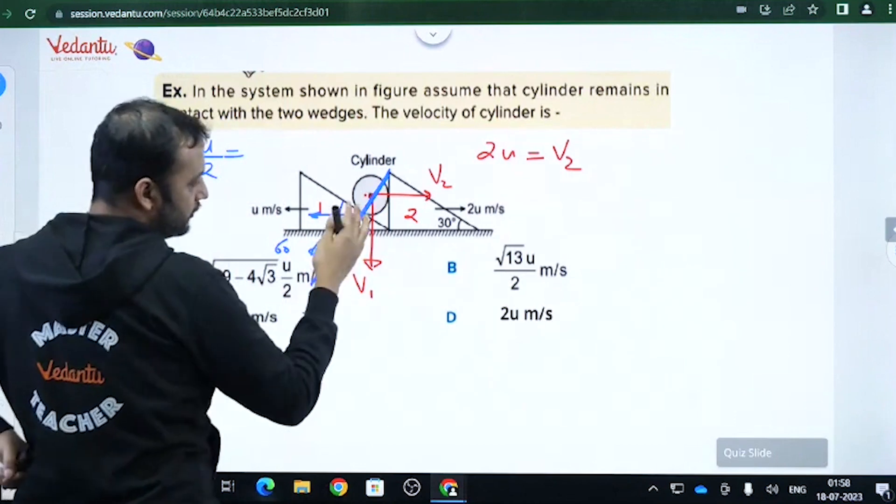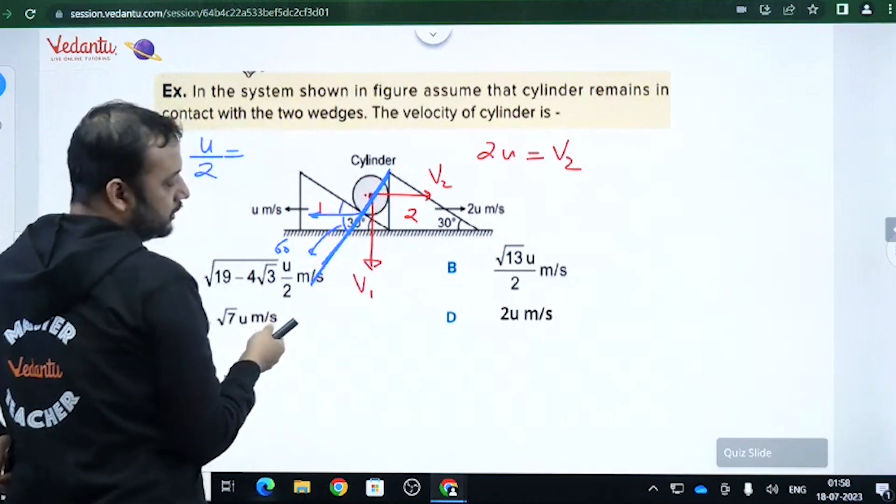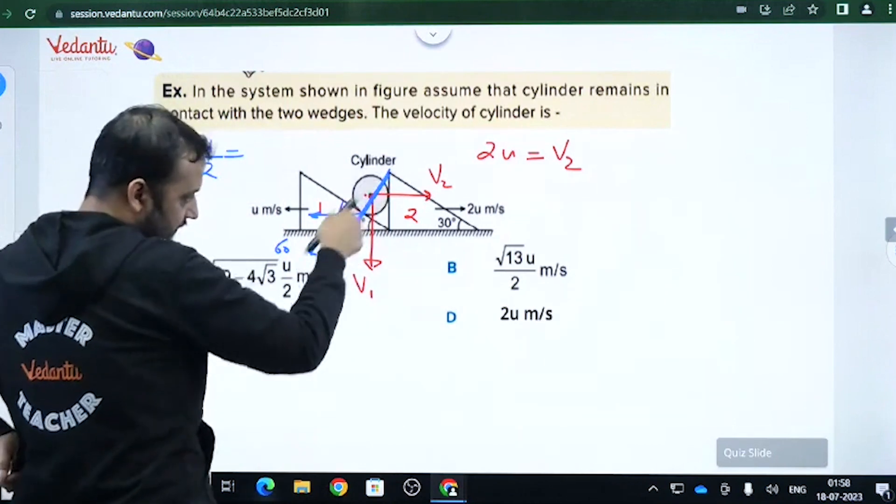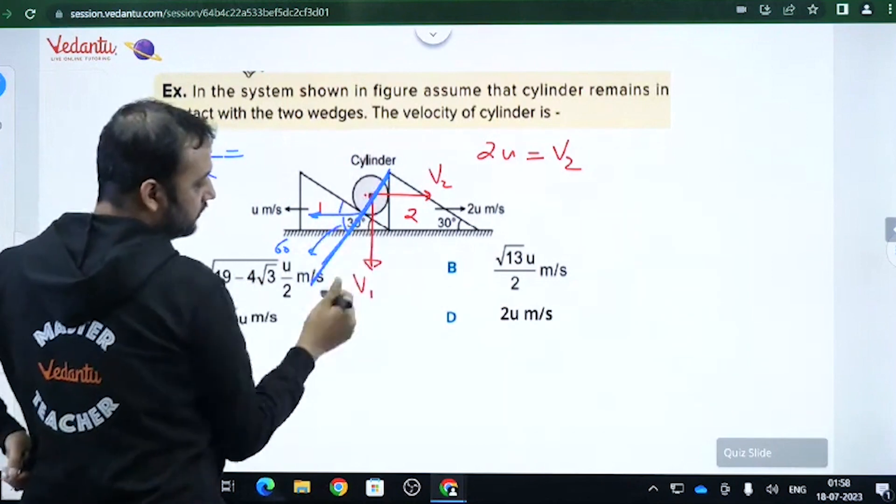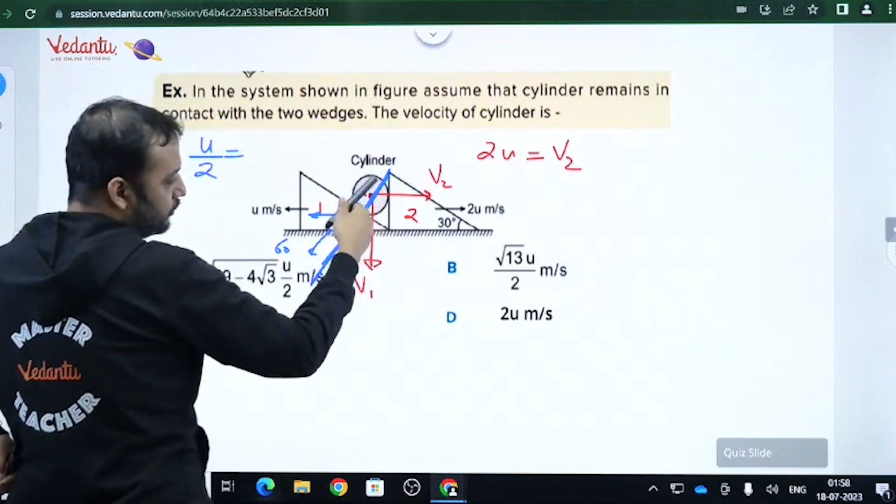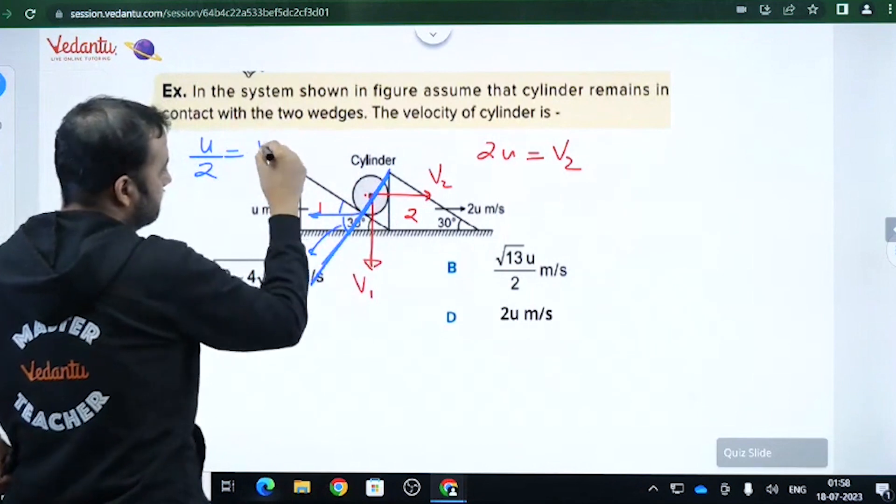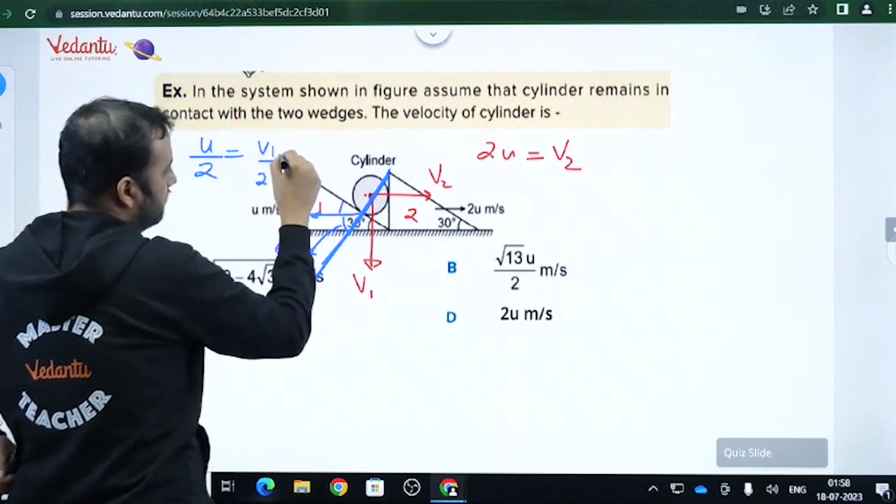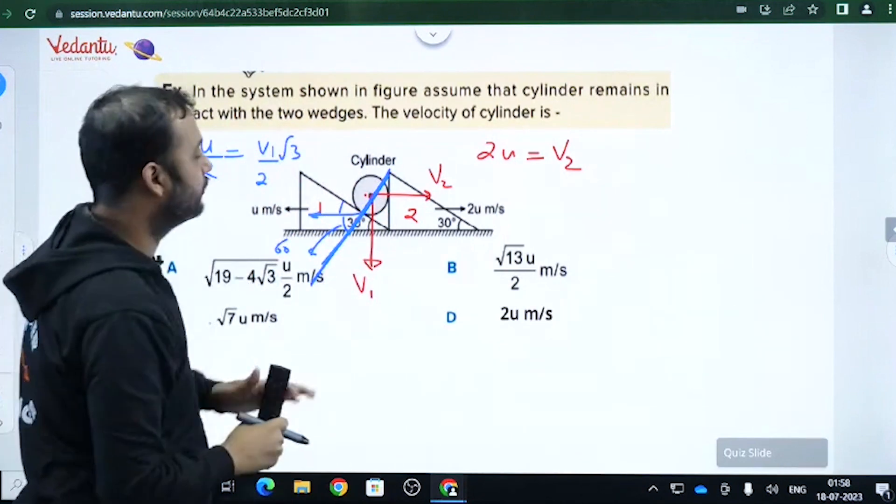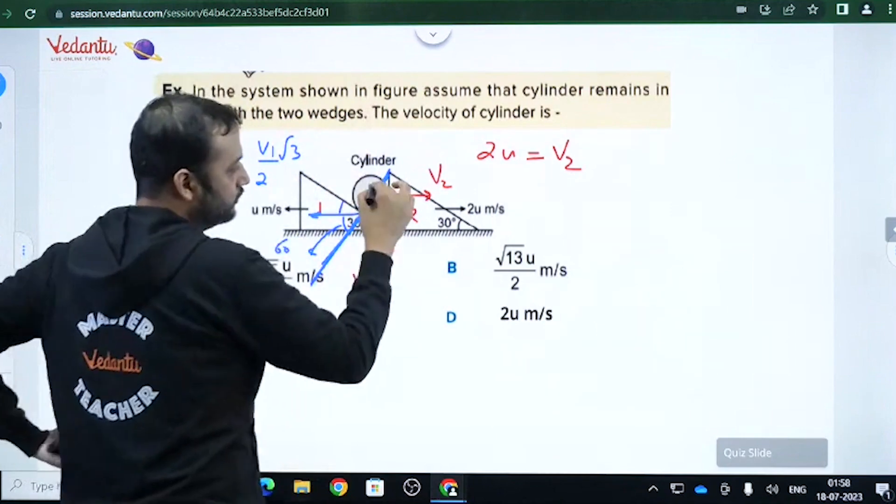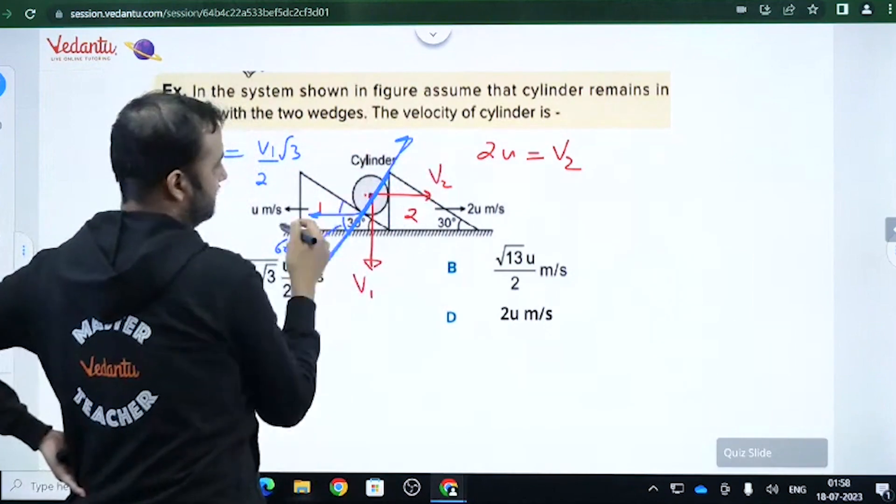That should be equal to velocity of cylinder along the common normal. Now velocity of the cylinder along this axis will be contributed both by v1 and v2. v1 will have a contribution of v1 cos 30. v2 will have an opposite contribution because v2 is having a component along this direction, so minus v2 cos 60, which is minus v2 by 2.